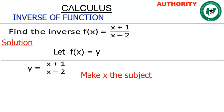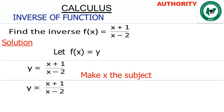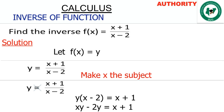Now we make x the subject — that is, we solve for x. We cross multiply, so we have y times (x minus 2) equal to x plus 1. Now let's open the bracket: y times x gives us xy, and y times minus 2 gives us minus 2y, equal to x plus 1.